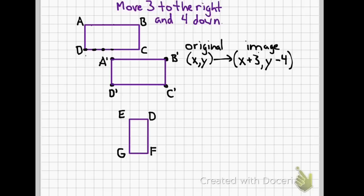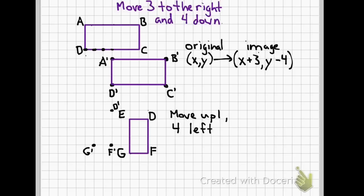Let's do another one. Let's look at e, d, f, g. We're going to move up one and four left. Each point is going to move. So let's start with g. I go up one, four to the left, gives me g prime. With f, I go up one, four to the left, gives me f prime. Now we're going to go up one, four to the left to get to d prime. And up one, four to the left to get to e prime. We have our new points.